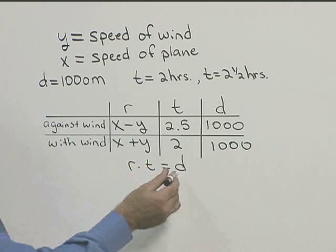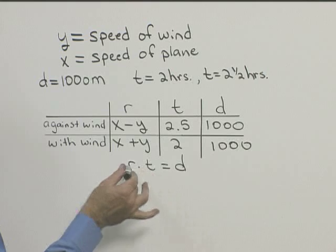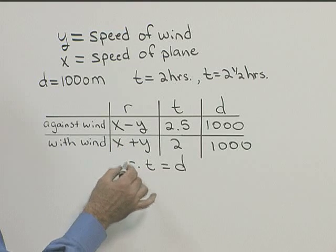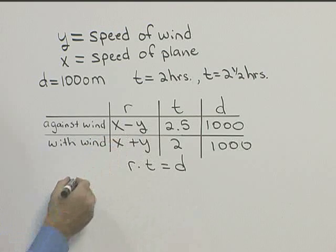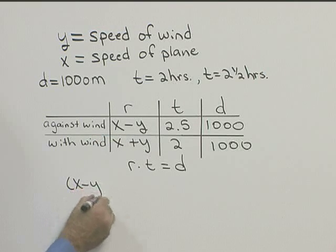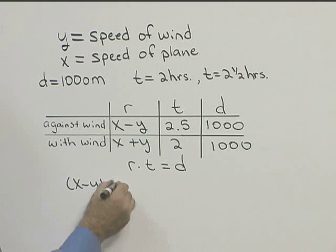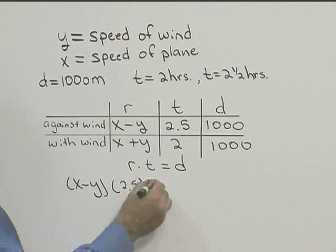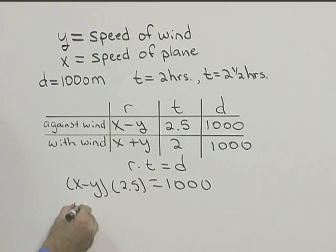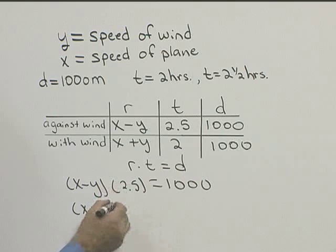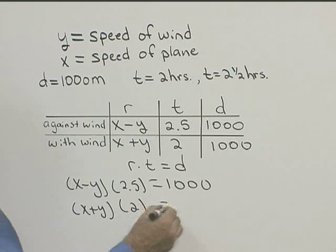So if we take the distance formula, which we know is distance equals rate times time, and rewrite it as rate times time equals distance, we can get an equation. So we'll have rate, which is X minus Y, times our time, which is 2.5, equals a thousand. The second equation will be X plus Y times our time, which is 2, is equal to a thousand.